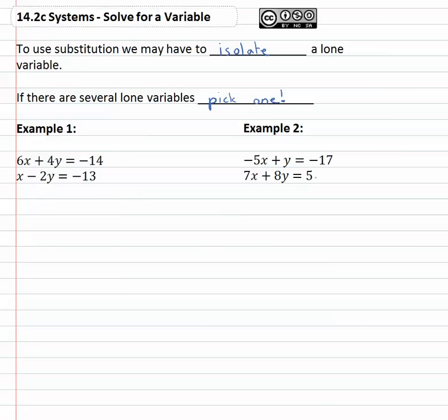So for example if we're looking at 6x plus 4y equals negative fourteen and x minus 2y equals negative thirteen, there's no x equals or y equals.